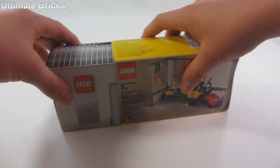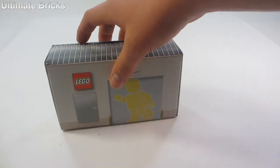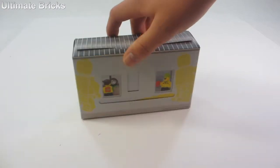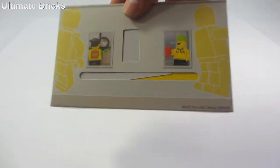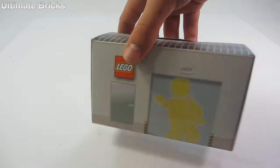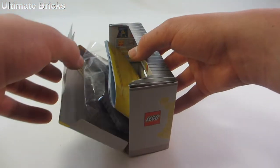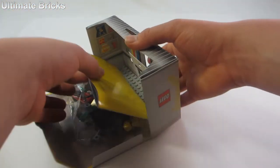So this sleeve comes off right here, and then it has this kind of cardboard box which has some nice artwork on it. You can see the back there, and then the front.